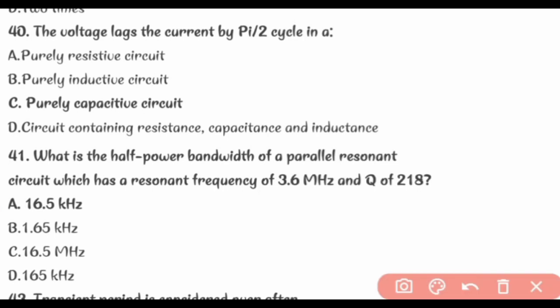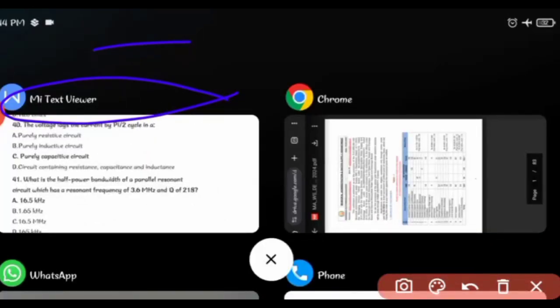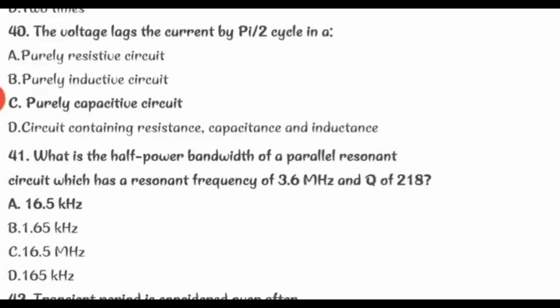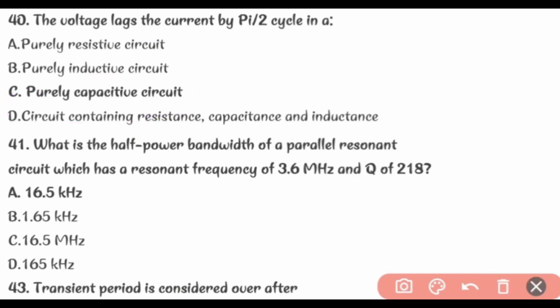The voltage lags the current by pi/2 radians in a purely capacitive circuit.